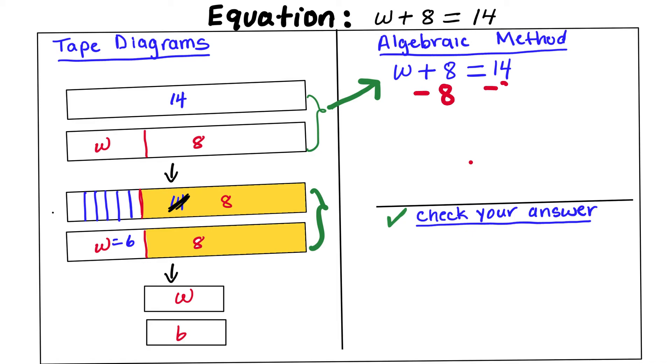Subtract 8, subtract 8. So 14 minus 8 gives us 6. And then the 8 is going to disappear, and you bring the w down. So this step is the same thing as the step that we did here, subtracted 8. And then your final answer, or your final step, is right here.